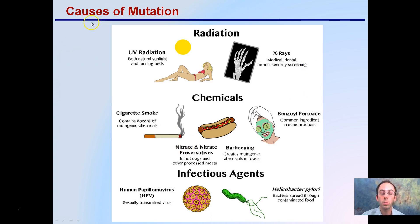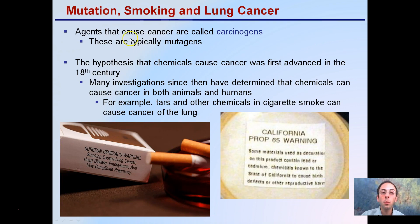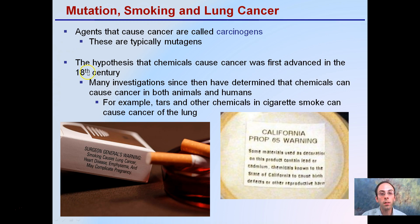What causes these mutations? There's a whole host of potential reasons: UV radiation, cigarette smoke, virus-induced causes in some cases, certain chemicals and products, and X-rays. The main categories are radiation, chemicals, and infectious agents. Agents that cause cancer are called carcinogens — they're typically mutagens. The hypothesis that chemicals cause cancer was first advanced in the 18th century, and many investigations since have determined that chemicals can cause cancer in both animals and humans. The tars and other chemicals in cigarette smoke are a prime example.